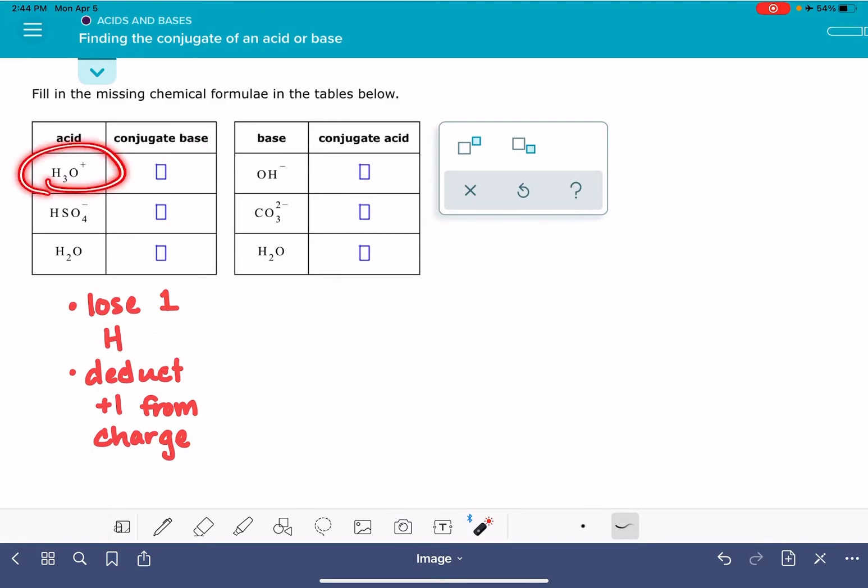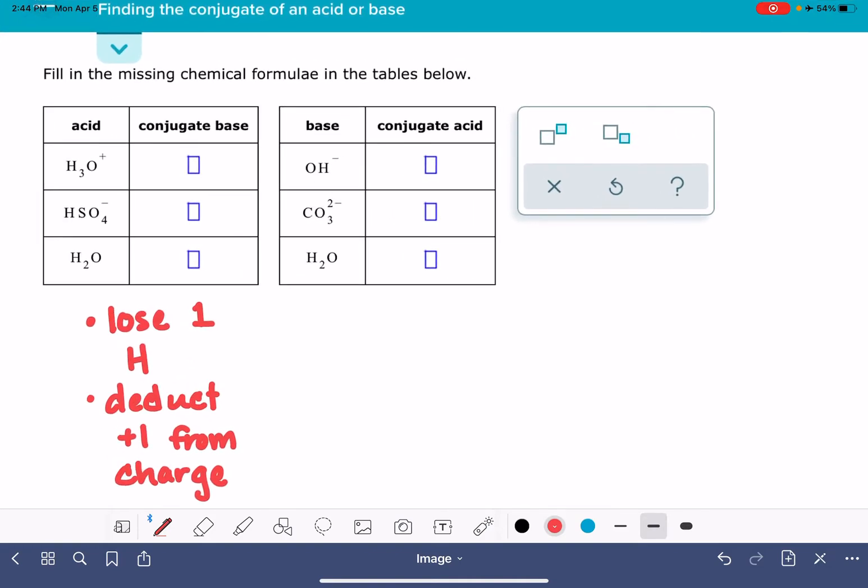So if our acid is H3O+, the conjugate base formula, first of all, needs to have one fewer hydrogen atom. So instead of three hydrogen atoms, it needs to only have two hydrogen atoms. And then also the charge needs to be deducted by plus one. So since we're starting with a plus one charge, we need to take plus one away from that, which means we're just going to end up with a neutral charge. We just leave it as H2O.